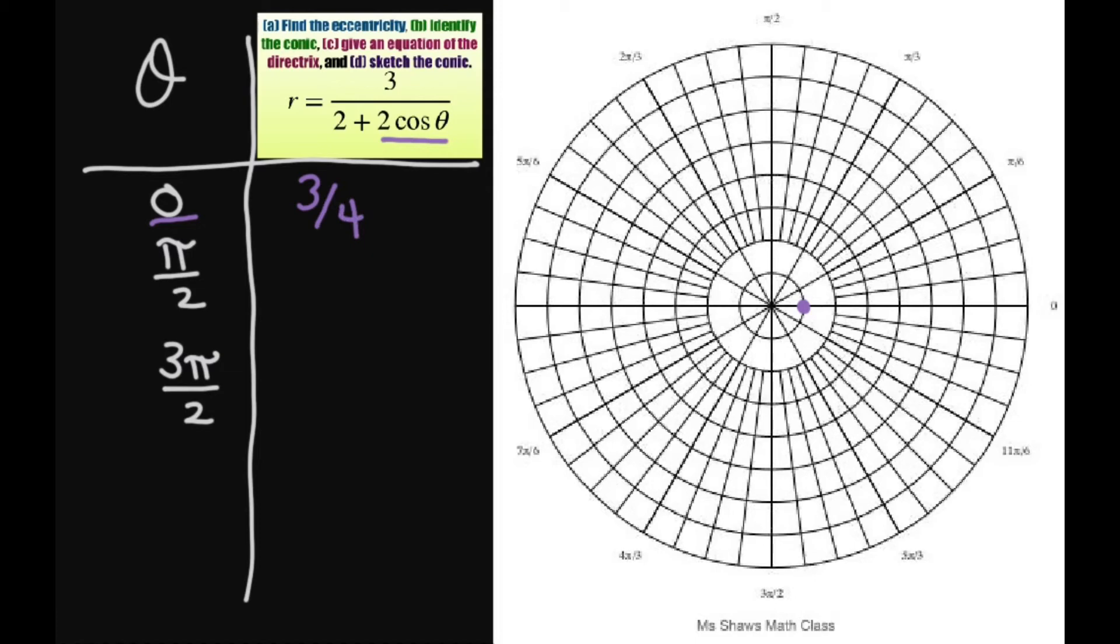I'm going to plot my directrix, which is at 3 halves. If this is 3 fourths, then this will be 3 halves. We're going to go by halves. This would be 3 fourths, 3 eighths, and so forth - we're just multiplying by 2.